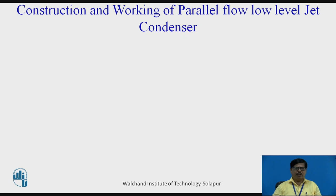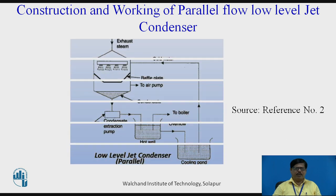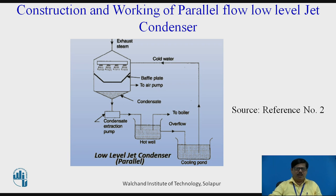Now let us see the construction and working of a parallel flow low-level jet condenser. The low-level jet condenser is a condenser in which the height of the condensing chamber is quite low, and the overall unit is small enough to be placed below the steam turbine. As seen in the figure, the exhaust steam from the turbine enters from the top side of the condensing chamber. It is called a parallel flow jet condenser because the exhaust steam moves from top to bottom and the cooling water, sprayed through orifices, also flows from top to bottom — both in the same direction.